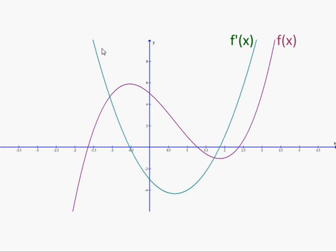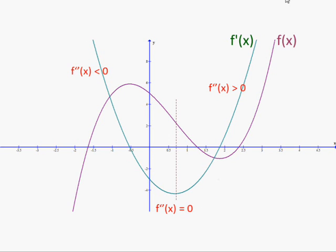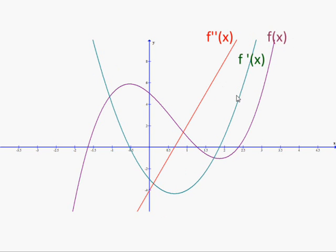Now let's think about the second derivative. We know that at the minimum of the derivative, the second derivative must be zero. This red line crosses the original function at a point of inflection, where the curve goes from concave down to concave up. On the left-hand side the second derivative is negative; on the right-hand side the second derivative is positive. You can see that through the slope of the derivative — the slope is going down, so the second derivative is negative. On the right side the slope is going from negative to positive, so the slope is increasing, so the second derivative is positive.